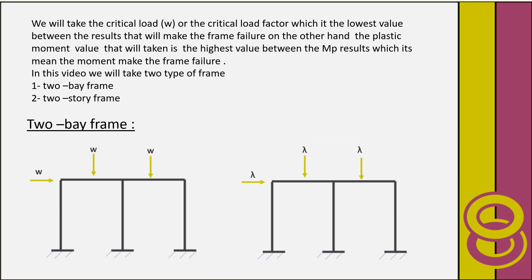First, the two-bay frame. As you see in the slide, this is the shape of a two-bay frame that extends in the horizontal direction. This frame is subjected to both vertical and horizontal loads. Let's go on to find the procedure to determine the collapse load and collapse load factor.